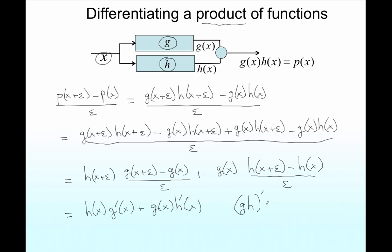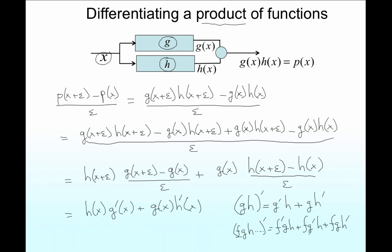So we find that if we take the product g times h and differentiate it, we get g prime h plus g h prime. The obvious generalization is that if we have something like f times g times h, the derivative is f prime g h plus f g prime h plus f g h prime — and you could continue for as many functions as you like. In Leibniz notation, d by dx of h times g equals dh by dx times g plus h times dg by dx.